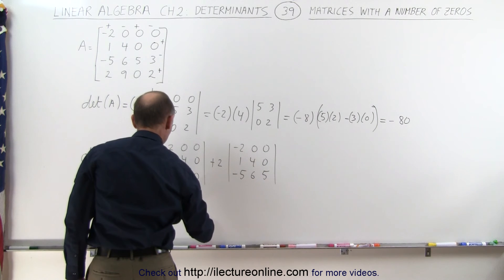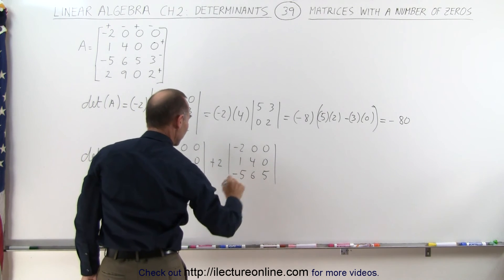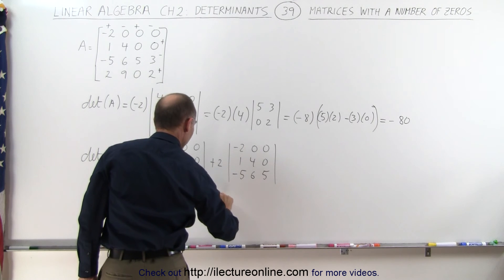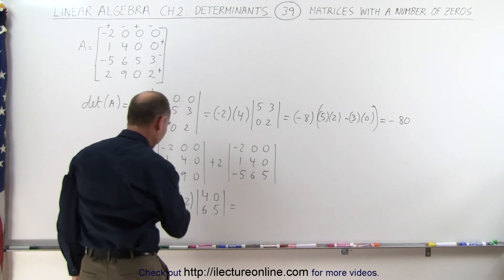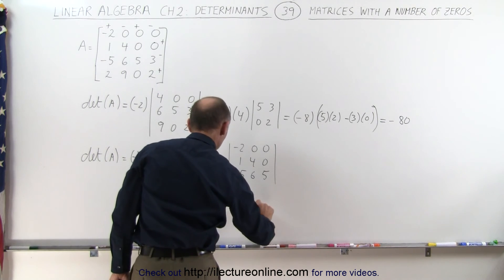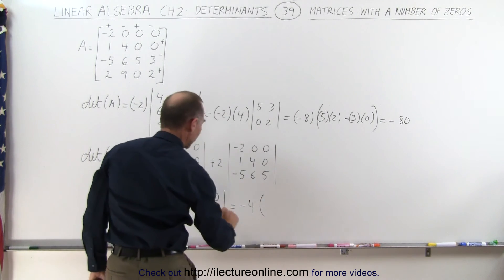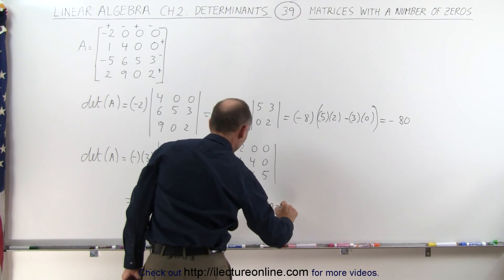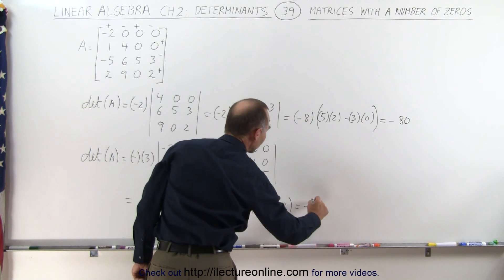So that's plus 2 times minus 2 times the determinant [4 0; 6 5], which is equal to minus 4 times (4 times 5 which is 20 minus 0), or minus 80.